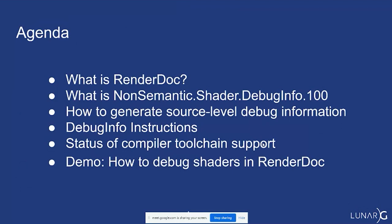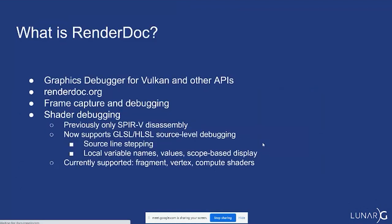RenderDoc, as probably a number of you know, is a graphics debugger for Vulkan and other APIs as well. You can find it at renderdoc.org. It can capture a frame and then debug that frame — essentially inspection of all the commands that go into creating that frame, including looking at the shaders and being able to debug them. Up till now there has been a way to debug shaders for a frame, but it's been at the SPIR-V assembly level, which is a bit low level.